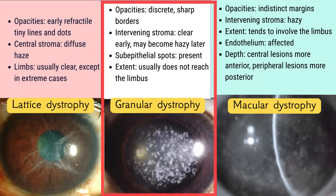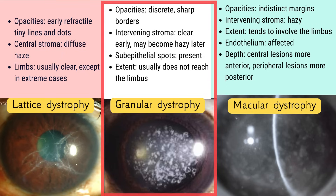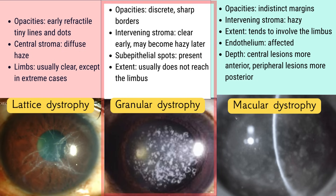In granular corneal dystrophy, the stromal opacities are discrete with sharp borders, making them easily distinguishable on slit-lamp examination. Early in the disease, the stroma between those opacities is clear, although it may become hazy as the condition progresses. Sub-epithelial spots are often present. Unlike macular dystrophy, the lesions in granular dystrophy usually do not extend to the limbus, remaining confined to the central cornea.